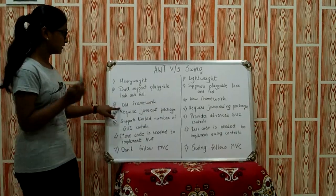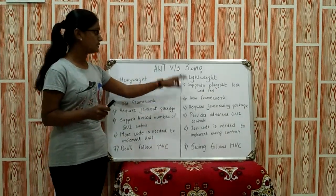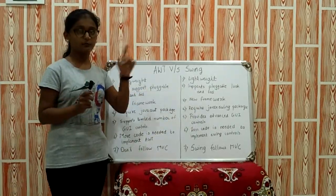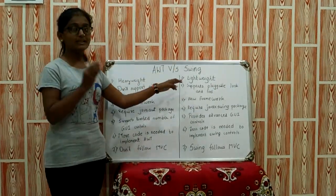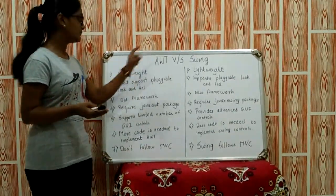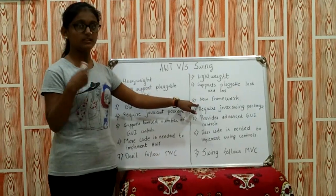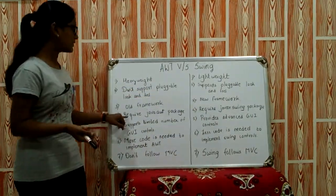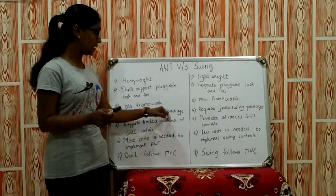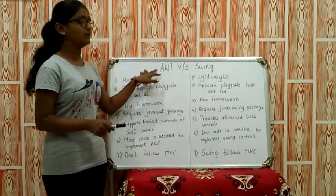Now coming towards the third difference: AWT is an old framework and Swing is a new framework. Moving towards the fourth difference: AWT requires the java.awt package, meaning whatever components are there in AWT come under the java.awt package, and for Swing it requires the java.swing package.